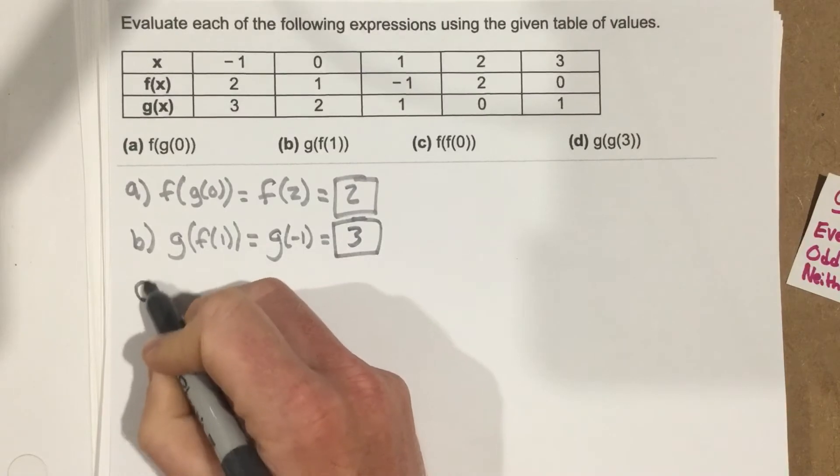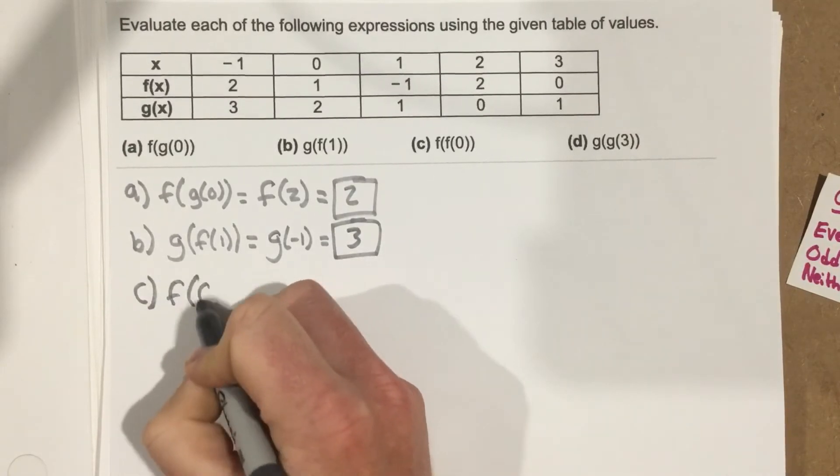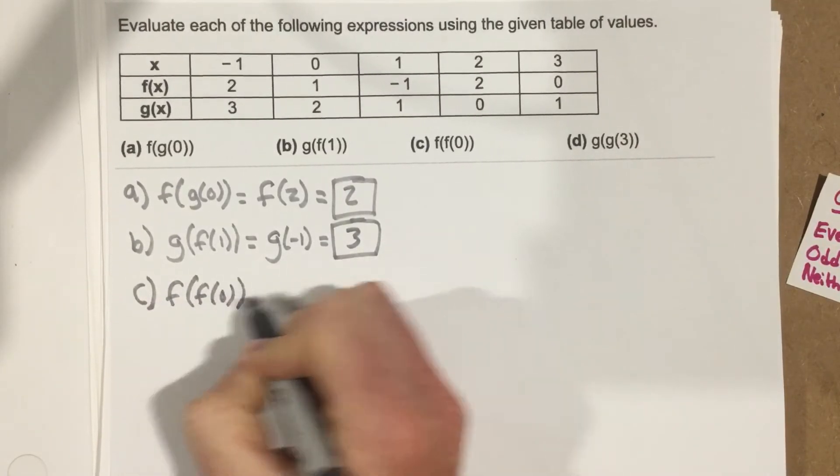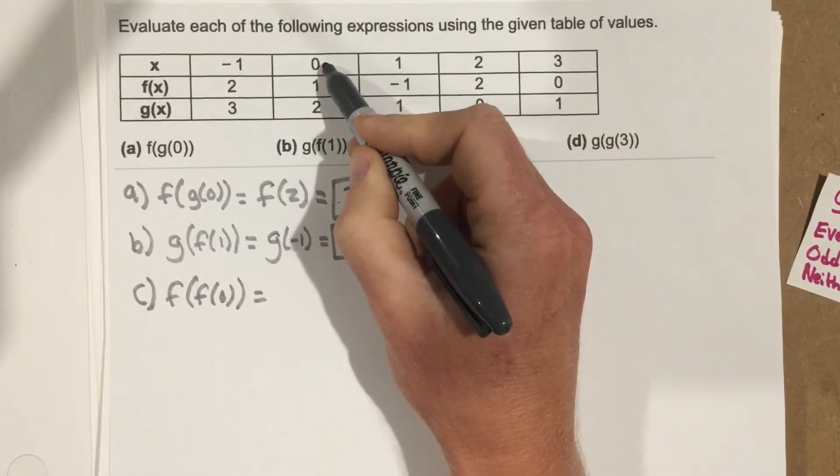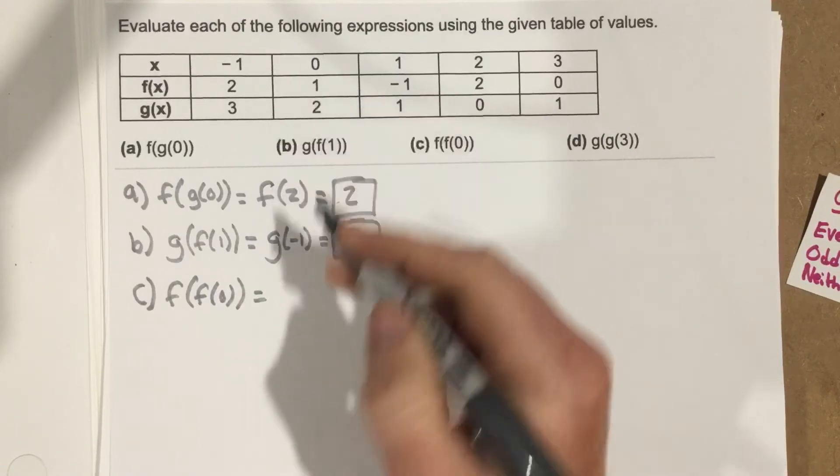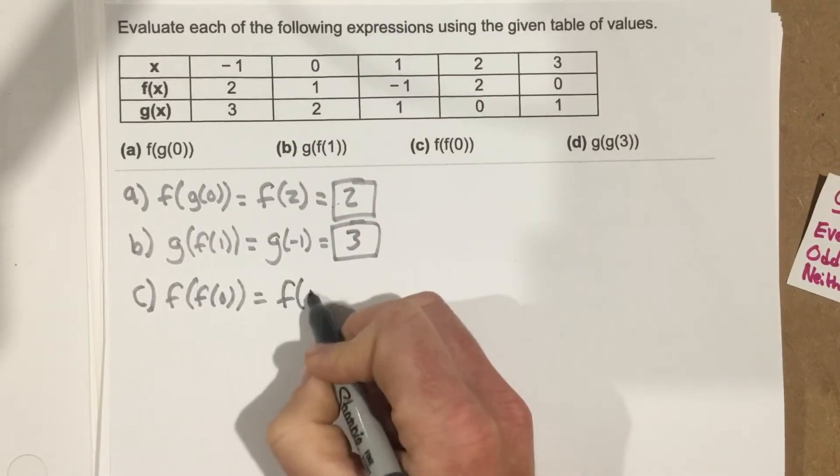Now I go to part C, f of f of 0. So I go to the 0 input for x, look at what the f value is, which is 1. So I end up with f of 1 now.